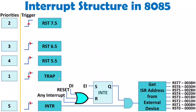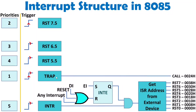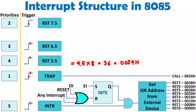Now let us talk about TRAP. TRAP has the highest priority and does not need any condition — it gets executed immediately once identified by the 8085. That is why it is both edge trigger and level trigger: if missed by the edge, it will be identified by the level. Whenever a TRAP arises, a call gets executed. TRAP was initially named RST 4.5, and 4.5 multiplied by 8 equals 36, which in hex is 0024h. Similarly, you can remember RST 5.5, 6.5, and 7.5 addresses by multiplying by 8 to get the hex address.